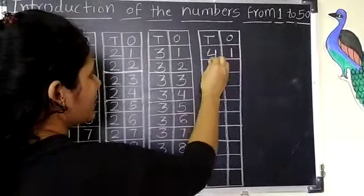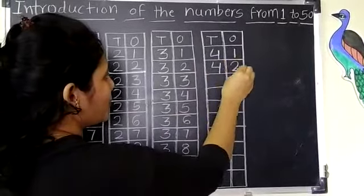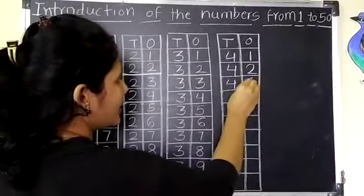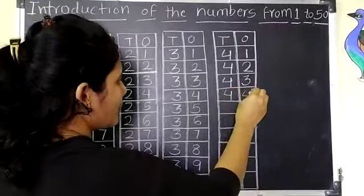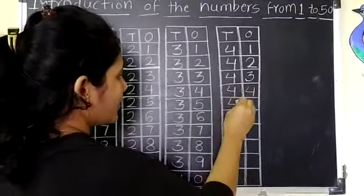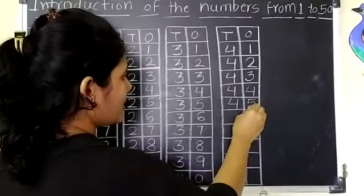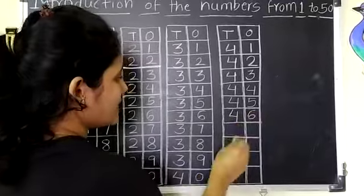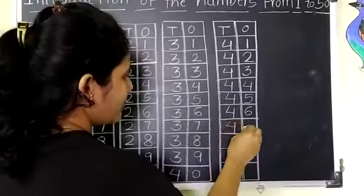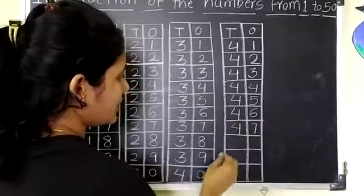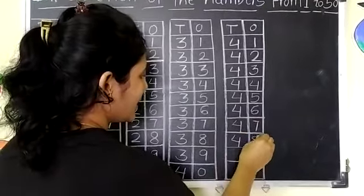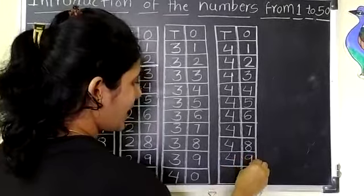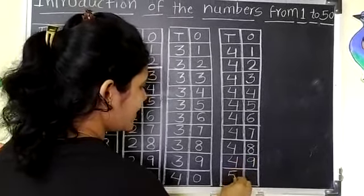4, 1, 41. 4, 2, 42. 4, 3, 43. 4, 4, 44. 4, 5, 45. 4, 6, 46. 4, 7, 47. 4, 8, 48. 4, 9, 49. 5, 0, 50.